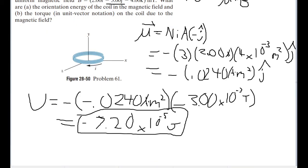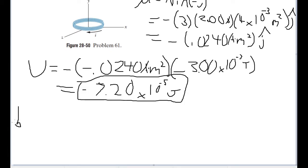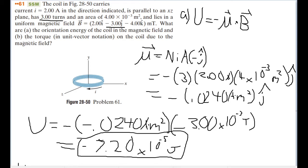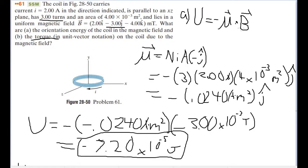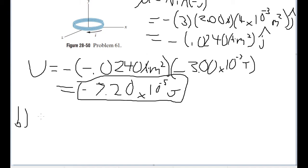Part B asks for the torque in unit vector notation on the coil due to the magnetic field. Keep in mind, while the magnetic energy is the dot product between the negative of the dipole moment and the electric field, the torque is equal to the cross product of the same two dimensions, only without the negative. That means that the torque due to the magnetic field is going to be equal to the dipole moment cross the electric field, both being vectors.